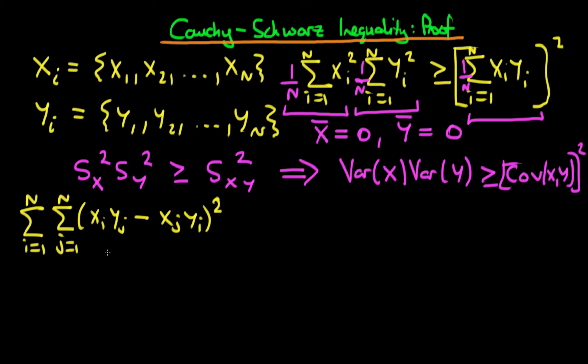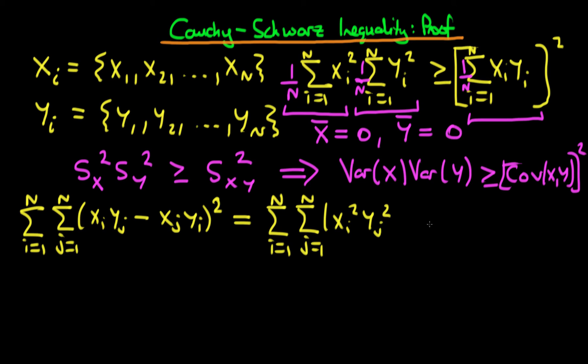First, I expand out the parenthesis. So I've got the sum from i equals 1 to n of the sum from j equals 1 to n of xi squared times yj squared, minus 2 times xi times yi times xj times yj, plus xj squared times yi squared. I've just expanded out that quadratic parenthesis.